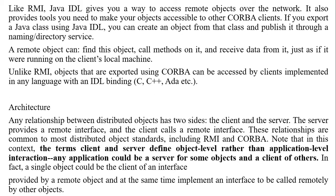Java IDL also provides tools to make your objects accessible to CORBA clients. If you export a Java class using Java IDL, you can create an object from that class and publish it through a naming directory service, so a remote object can find it and call methods on it. Unlike RMI, objects exported using CORBA can be accessed by clients implemented in any language with an IDL binding.